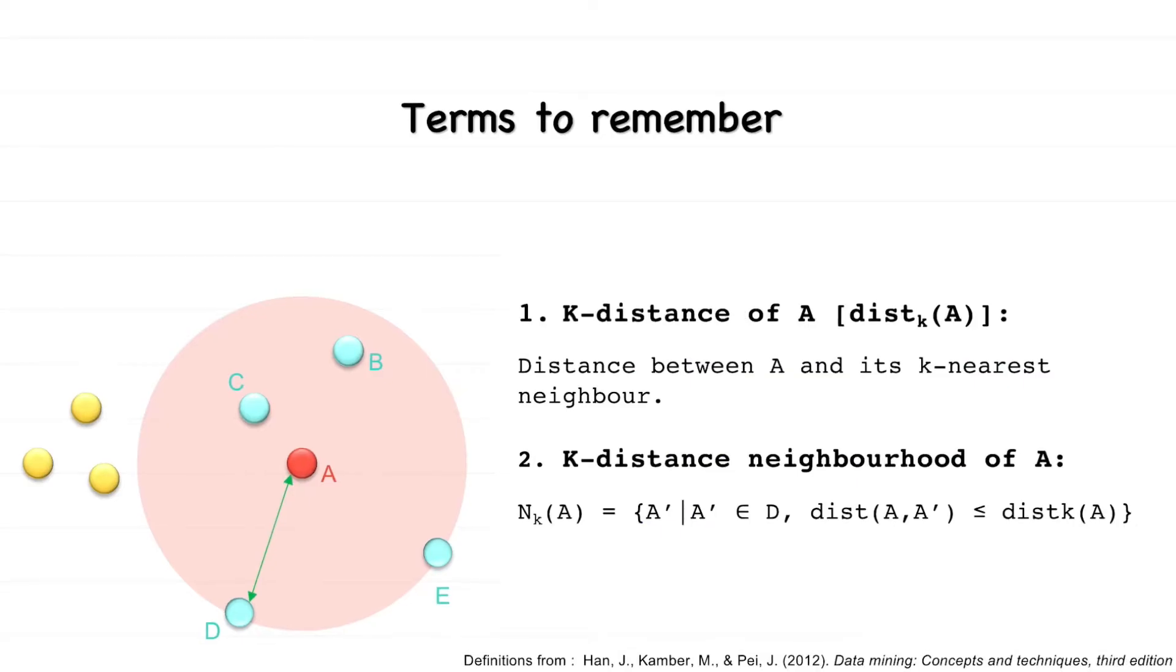For a given point A, k-distance of A is the distance between A and its k-nearest neighbor. For k equals 3, the k-distance of A equals the distance AD.